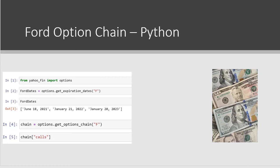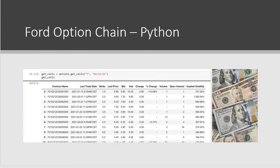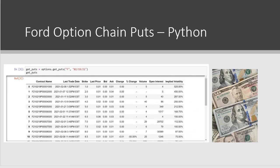Here is the Python code that retrieves the option chains for Ford. We used the Yahoo Finance library and imported options. We then retrieve the expiration dates for Ford Motor Company and can look at different dates for which Ford call options are expiring. If you run the code every minute, the trading price is continually changing because options are continually being traded throughout the trading day. Here is the Ford option chain for put options, which looks very similar to calls except that it is a chain for put options.